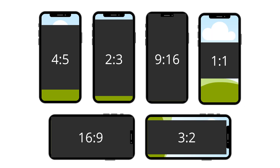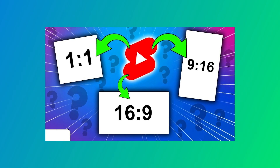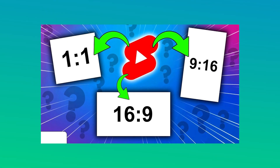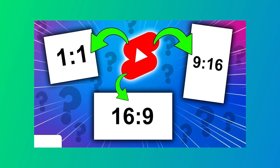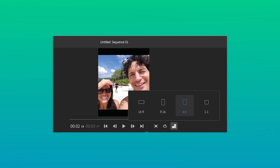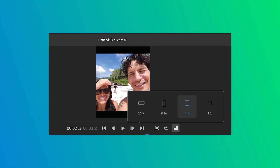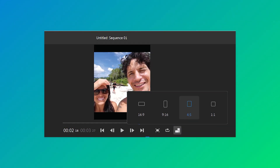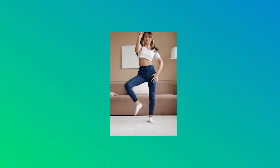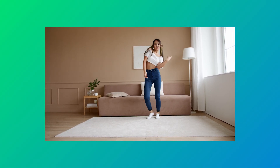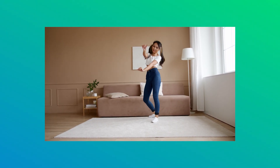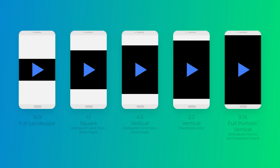Besides these two, 1:1 and 9:16 are getting popular on social media sharing nowadays. As you may know, many media players enable you to change the aspect ratio in real time during playback, yet the change is temporary. Next time you open it, you need to change the aspect ratio again. Besides, you may also need to convert a portrait video to landscape or convert the default 16:9 YouTube videos. Changing the aspect ratio of videos will provide you with plenty of options.